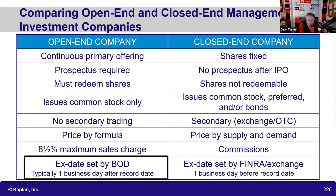Closed-end funds trade based on supply and demand, like a stock. You call your broker and place a market or limit order. Because there's a secondary market, it uses DERP, and the ex-date is one business day prior to the record date. I do a deeper dive in a 45-minute video where I show how to calculate POP and NAV in detail.